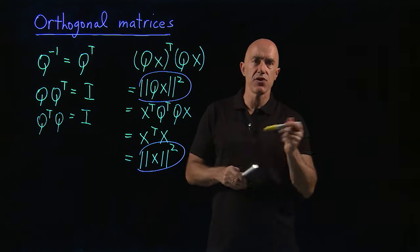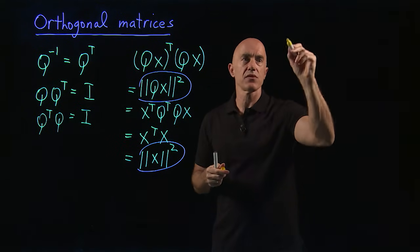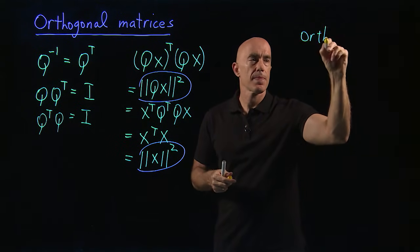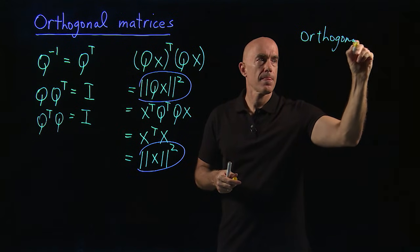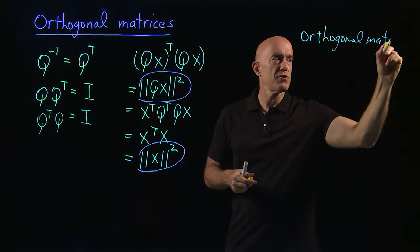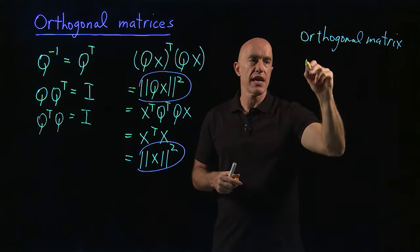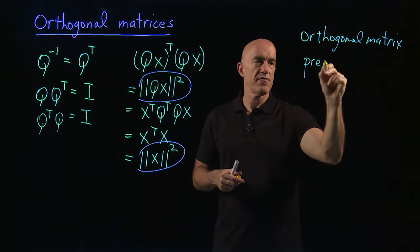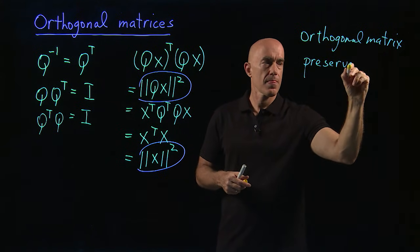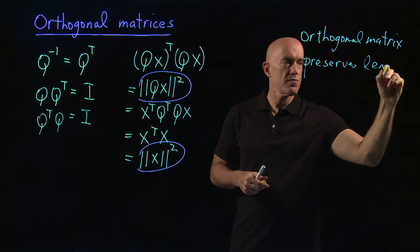So that tells us that Q preserves norm. So an orthogonal matrix preserves norms or preserves length. The norm is the length of a vector.